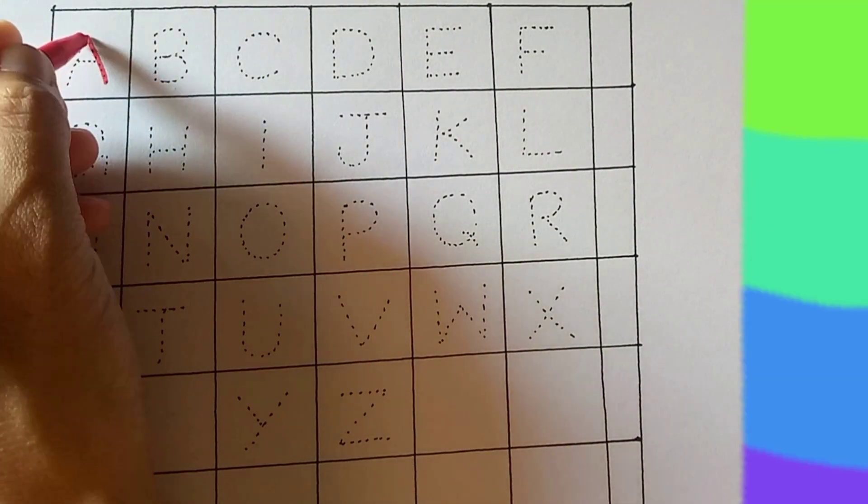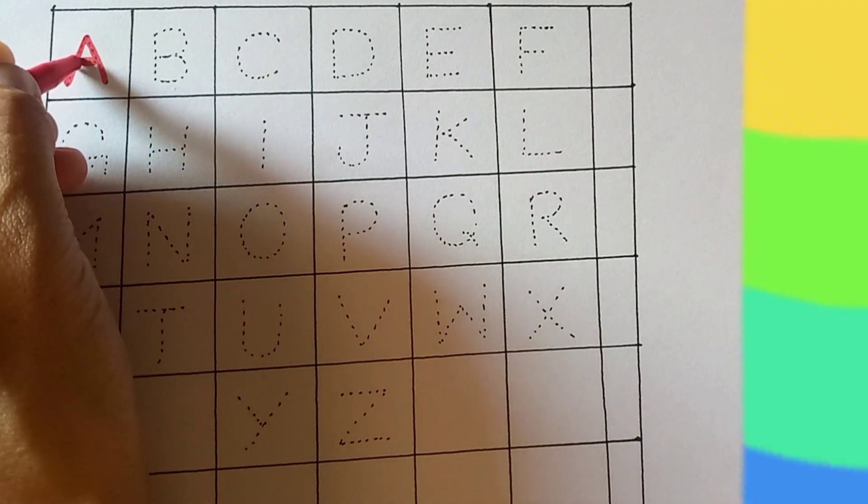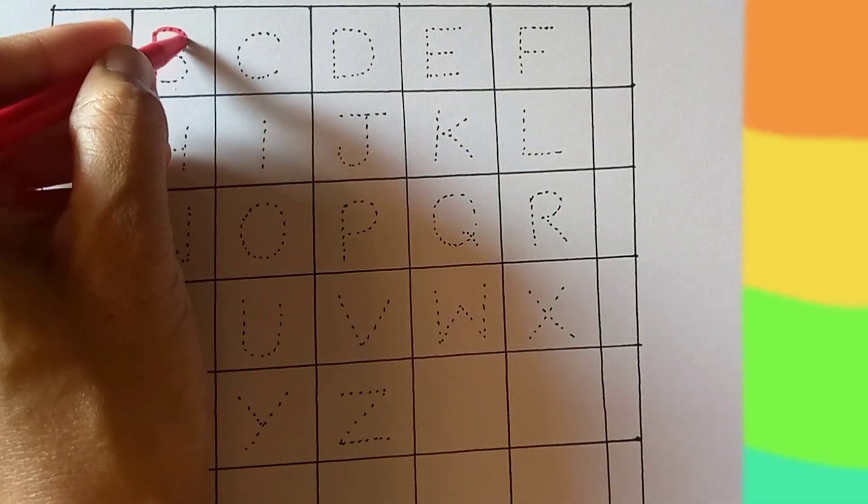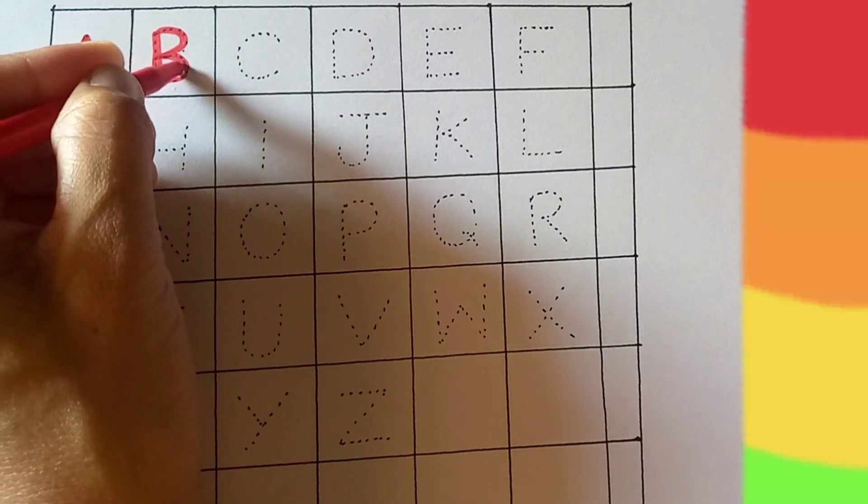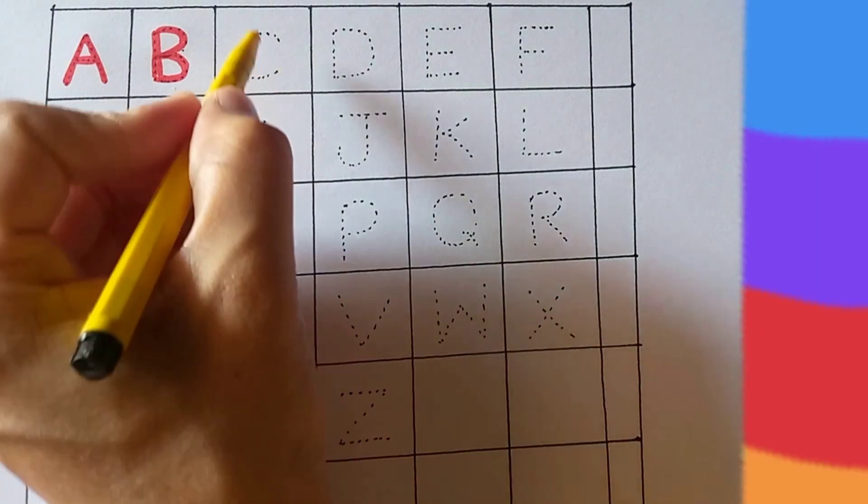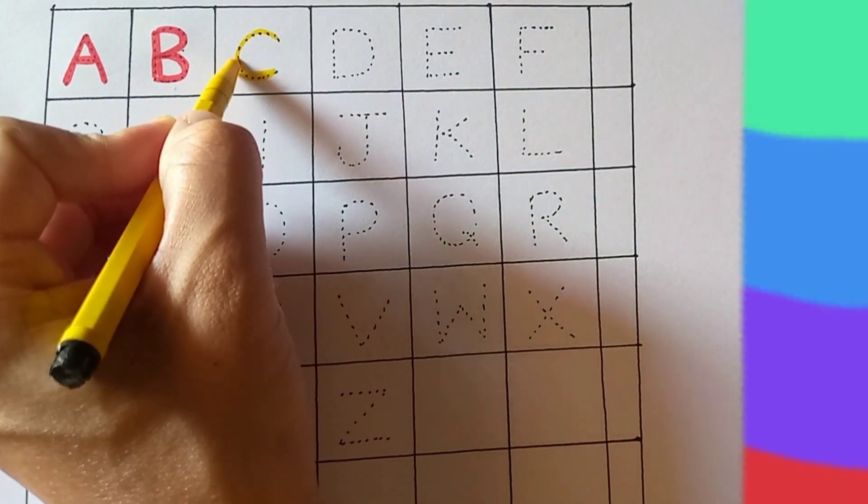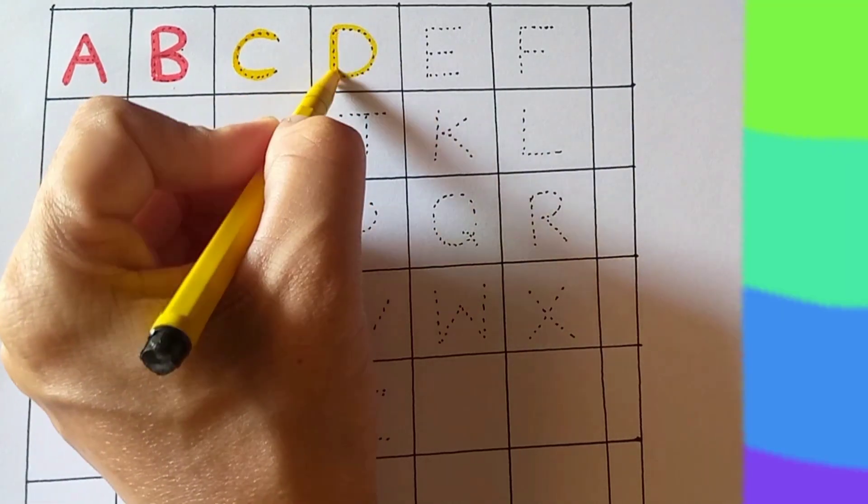A. A for Aeroplane. B. B for Banana. C. C for Cup. D. D for Dog.